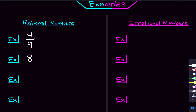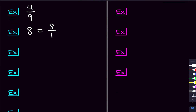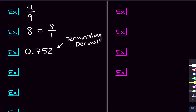Eight is also a rational number because you can write that as eight over one — an integer in the numerator and an integer in the denominator. Some other things that are rational numbers are terminating decimals. 0.752 is a rational number, and any terminating decimal will be a rational number. A terminating decimal is one that terminates — it stops, it doesn't go on forever. And any terminating decimal we can write as a ratio of two integers; we can write 0.752 as 752 over 1,000.